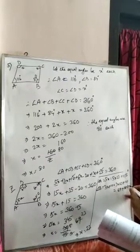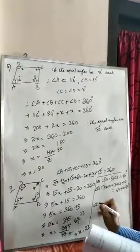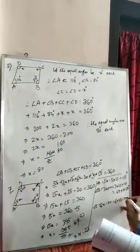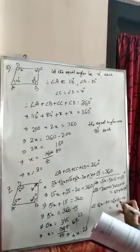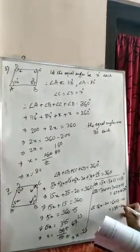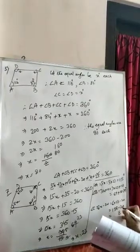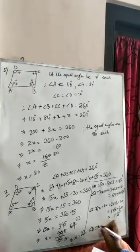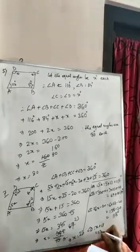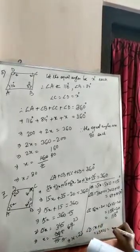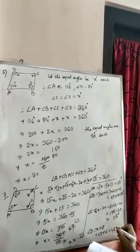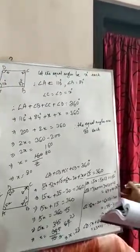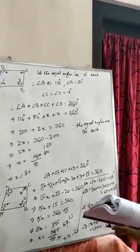Angle C = 6X − 20 = 6 × 23 − 20 = 138 − 20 = 118 degrees. Angle D = X + 25 = 23 + 25 = 48 degrees. So the four angles are: angle A = 115°, angle B = 79°, angle C = 118°, and angle D = 48°.